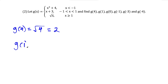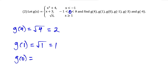For g of one, we ask where does one belong. One is greater than or equal to one, so we plug one into the bottom piece: square root of one is equal to one. So g of one equals one. For g of zero, zero is between negative one and positive one — that compound inequality with less than less than means x is between those two numbers — so we plug zero into the middle piece: zero plus three equals three.